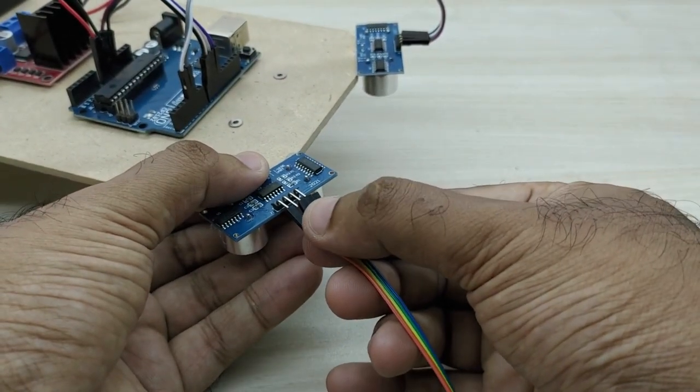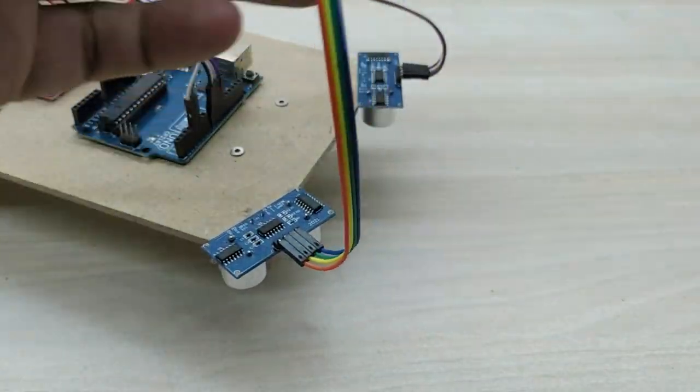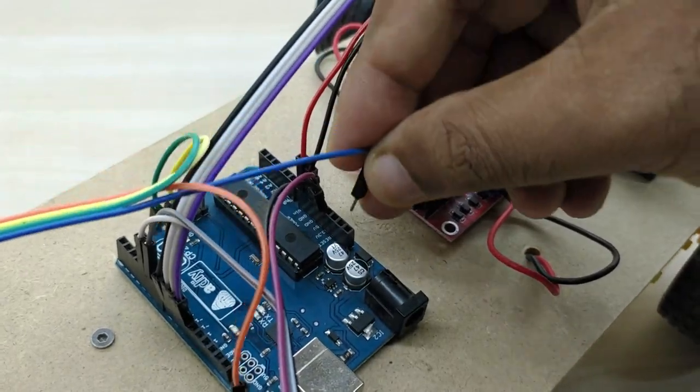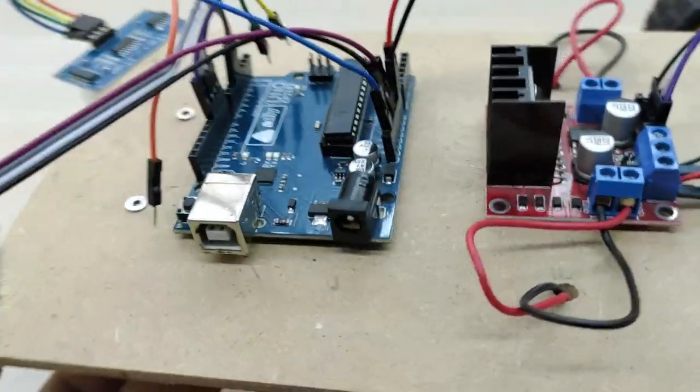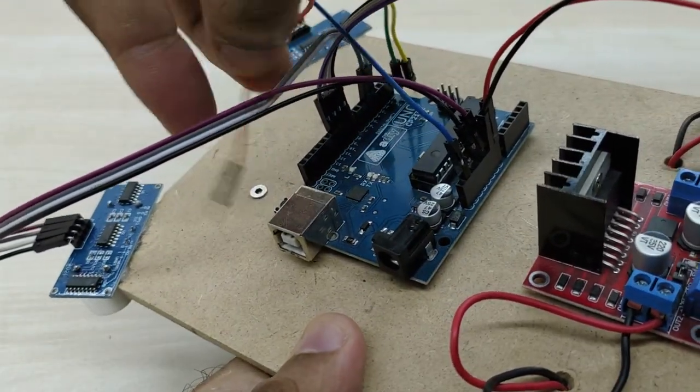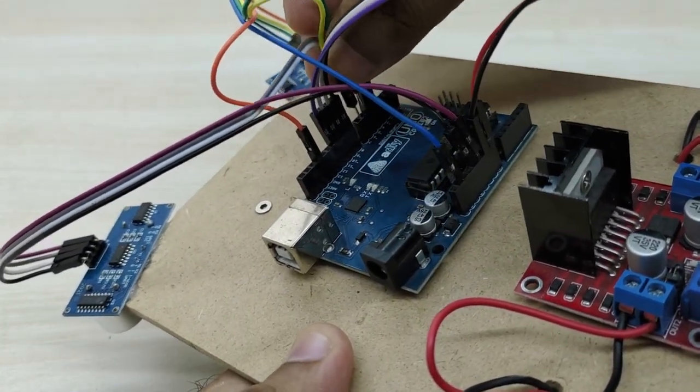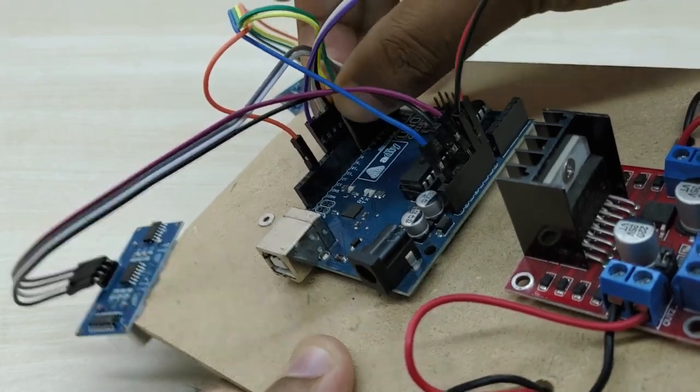Now, in a similar way, take four jumper wires and connect one end to the other ultrasonic sensor as shown. Connect the VCC pin of the sensor to plus 5 volt pin of Arduino and ground pin of sensor to ground pin of Arduino. Connect the trigger pin and echo pin to pin number 4 and 5 of Arduino respectively.